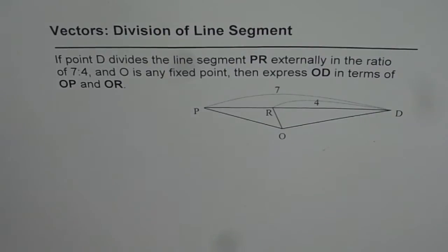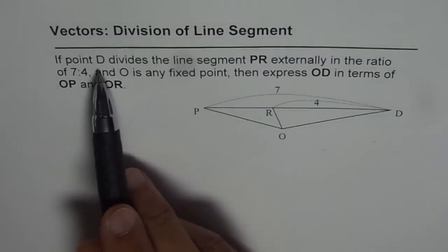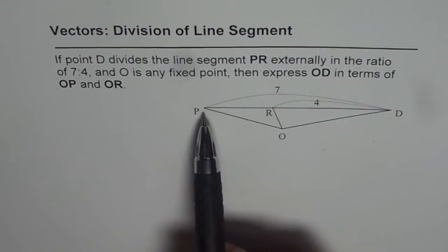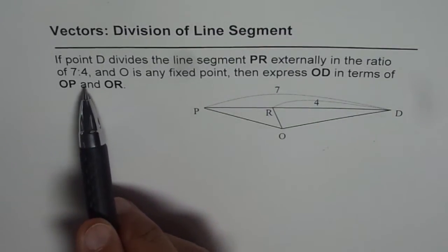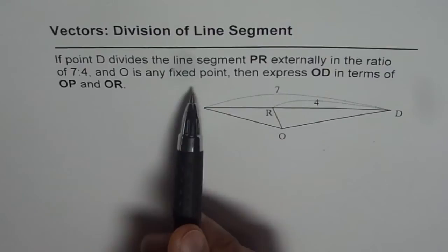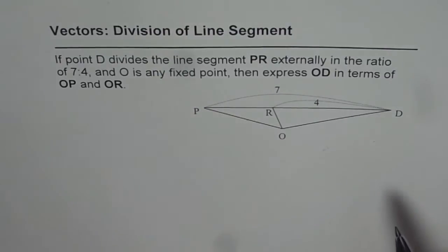The question is: if point D divides the line segment PR externally in the ratio of 7 is to 4, and O is any fixed point, then express OD in terms of OP and OR.